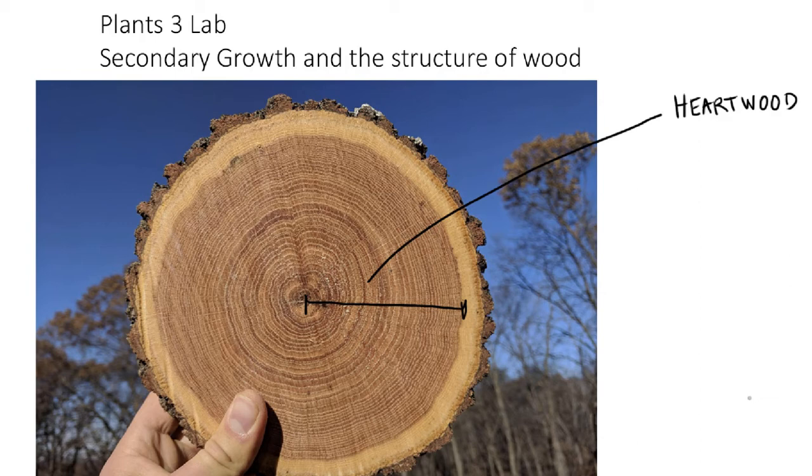As you might expect, the heartwood is toward the center of the tree trunk, while the xylem closer to the outside is called sapwood, also aptly named because it is still functional as a plant's vasculature, carrying xylem sap from the roots to the crown.